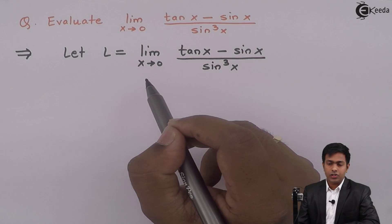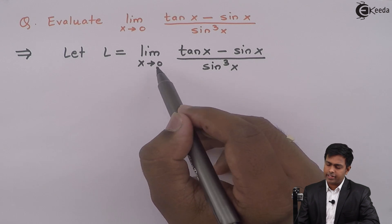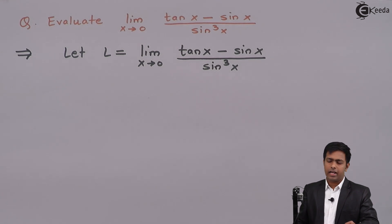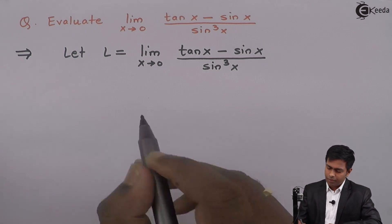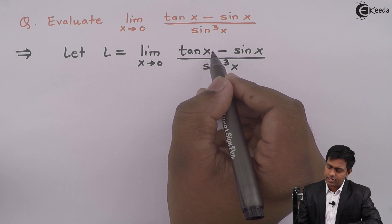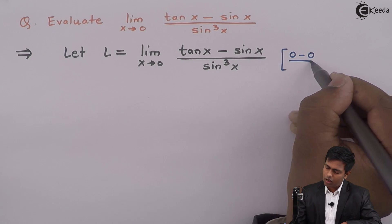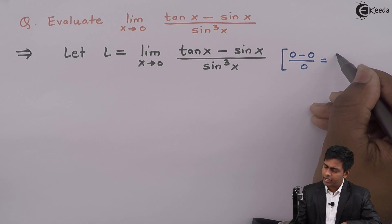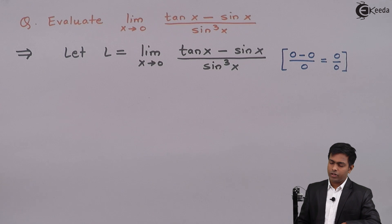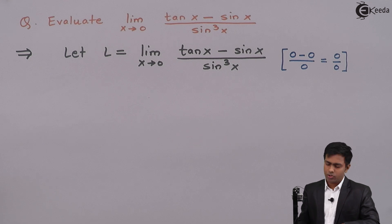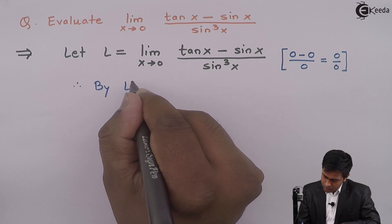Now we will substitute the limit x tends to 0 in the given function and check whether we are getting an indeterminate form or not. If we are getting an indeterminate form then we will apply L'Hôpital's rule to make the limit finite. Substituting x as 0: tan 0 is 0, minus sin 0 which is 0, upon sin cube 0 which is 0. So we are getting 0 upon 0, which is indeterminate form. Therefore, by L'Hôpital's rule.